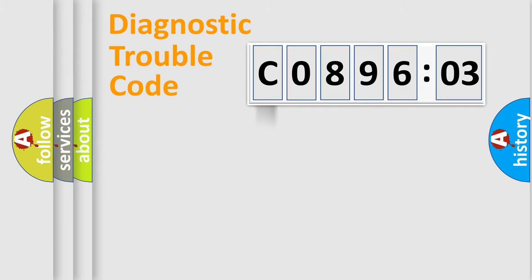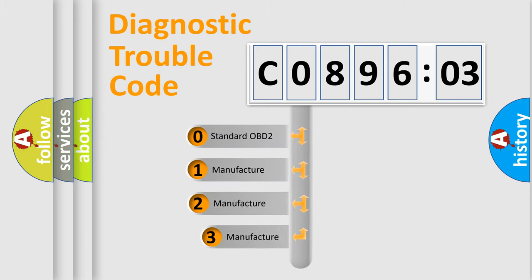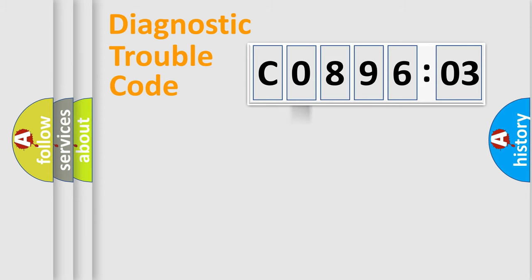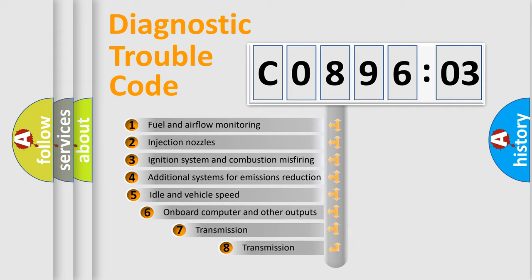Powertrain, Body, Chassis, Network. This distribution is defined in the first character code. If the second character is expressed as zero, it is a standardized error. In the case of numbers 1, 2, 3, it is a more prestigious expression of the car-specific error.